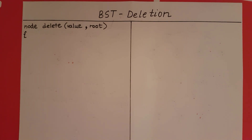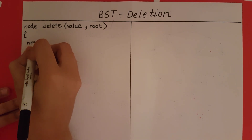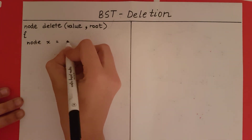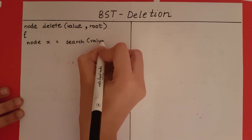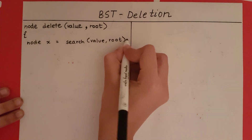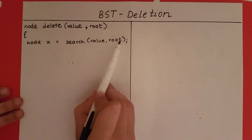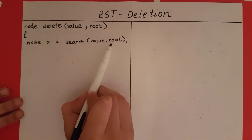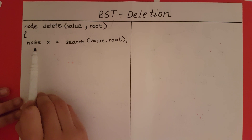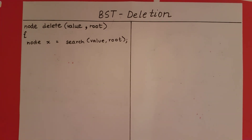The first step is to search for the node at which the value we want to delete can be found. We can do this using the search function which we have already defined in a previous video. So we say: node x is equal to search of value comma root. It searches for this value in the tree which has this as the root, and it returns the node at which that value was found. If the value is not found, it will return null.